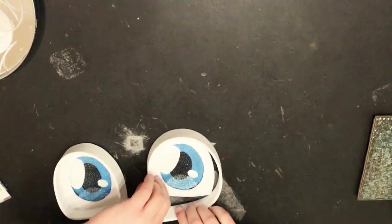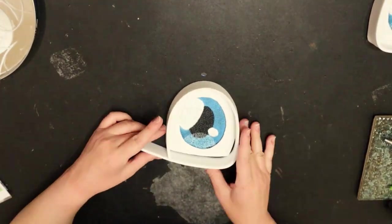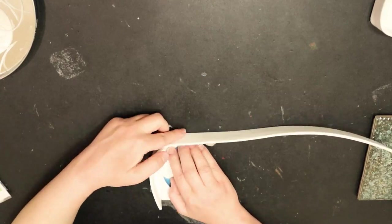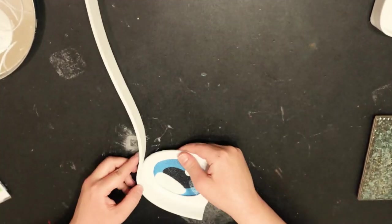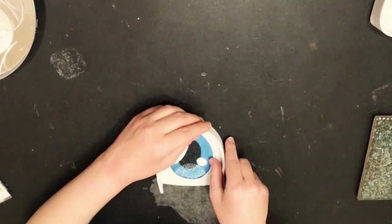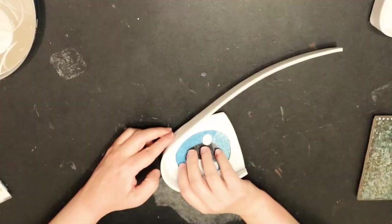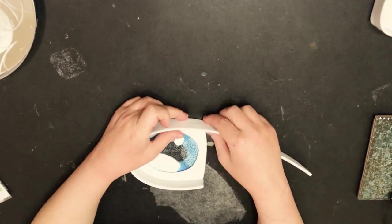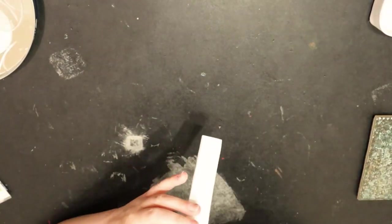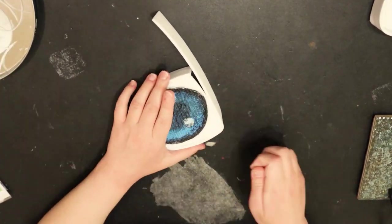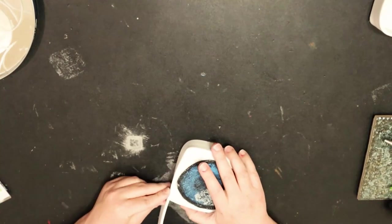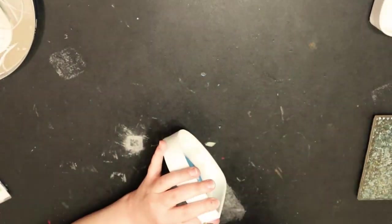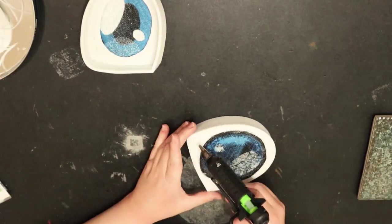And basically just do the same with the other one. Trying to also keep it clean. Not to put too much glue. Because you don't want as you're securing the two pieces of foam together. You don't want the glue to just squeeze out and kind of make it look messy. So it doesn't really need a whole lot. Yeah, the corner of this one kind of gave me a little bit of trouble. But I managed it in the end. Make sure it's nice and secure. And the back as well.